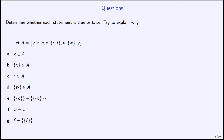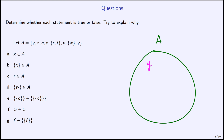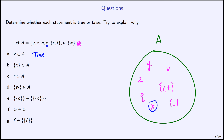Let's do some practice — pause and try these yourself before I go through the answers. We have set A containing elements Y, Z, Q, X, the set {R, T}, V, the set {W}, and Y. First question: Is X an element of A? Looking at the set, I see X just sitting on its own. So yes, this is true — X is an element of A.